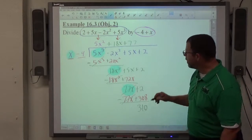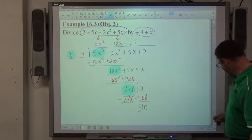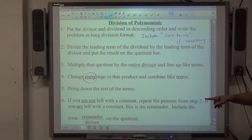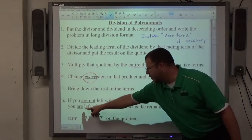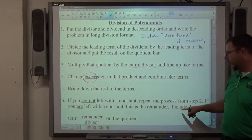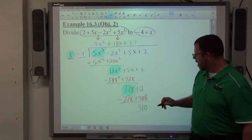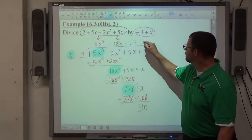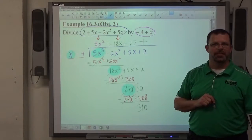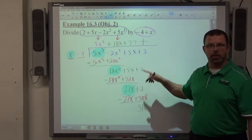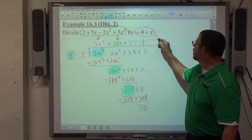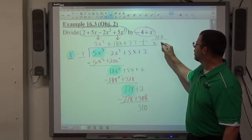So step 6, if you are left with a constant, this is the remainder. Include the term remainder over divisor on the quotient. Watch what I do over here. Positive 310, right? Plus. You have to put a plus or minus sign there. It's positive, so I put a plus. And then I put the remainder value, 310 over the divisor, x minus 4.